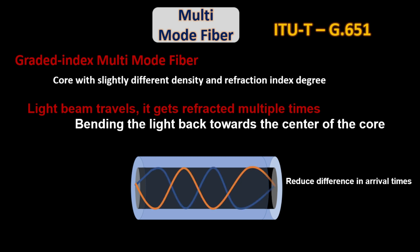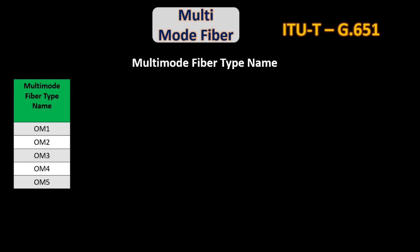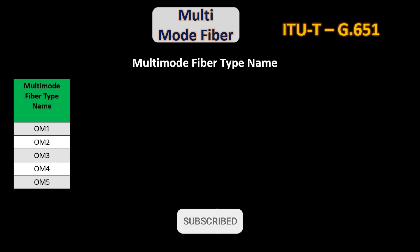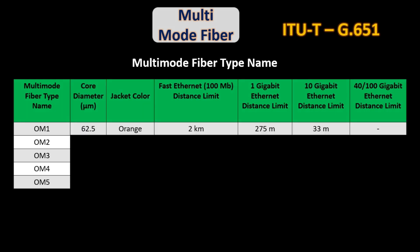There are different types of multi-mode fibers deployed based on core size. Initially OM1 was deployed, and later on 4 more were added, making a total of 5 multi-mode fiber types. OM1 is only capable of 100 Mbps bandwidth for a distance of 3 km, and 10 Gbps bandwidth for only 33 meters.